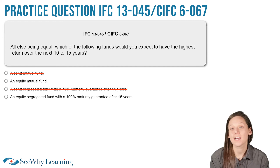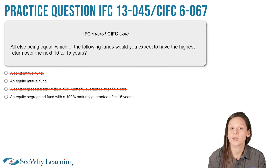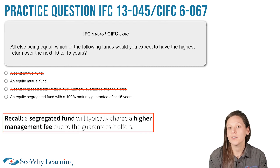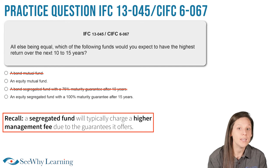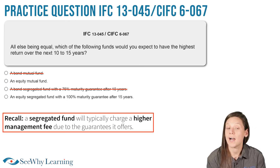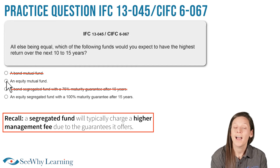Over a long time frame like 10 to 15 years, we would expect a positive return with both funds. But recall that a segregated fund will typically charge a higher management fee due to the guarantees it offers. So all else being equal, due to the relative MERs, we would expect the segregated fund to have a lower return and the mutual fund to have a higher return. So let's go ahead and select the equity mutual fund — and we're correct!